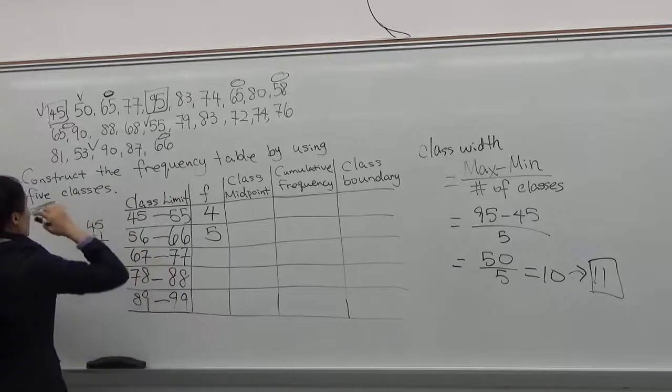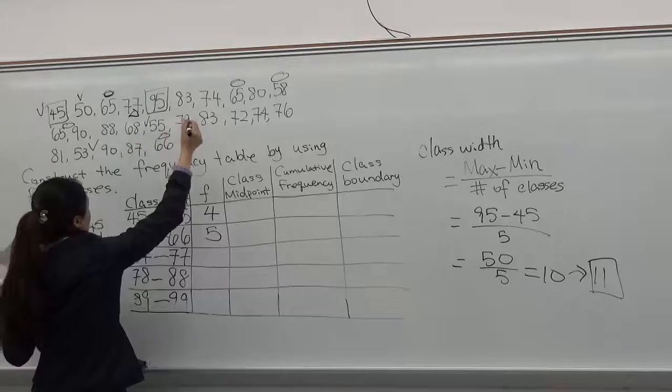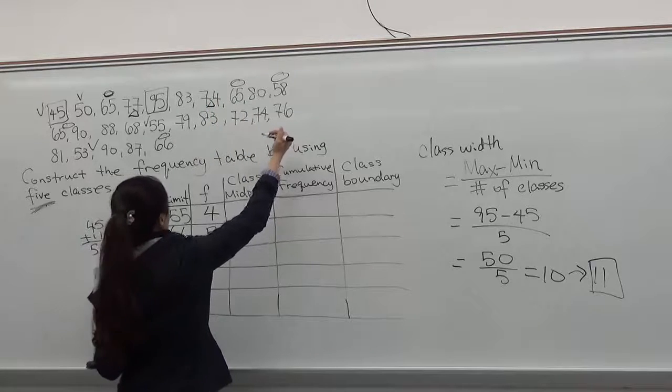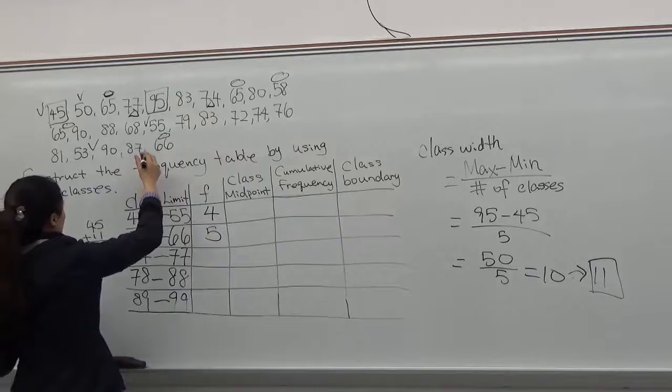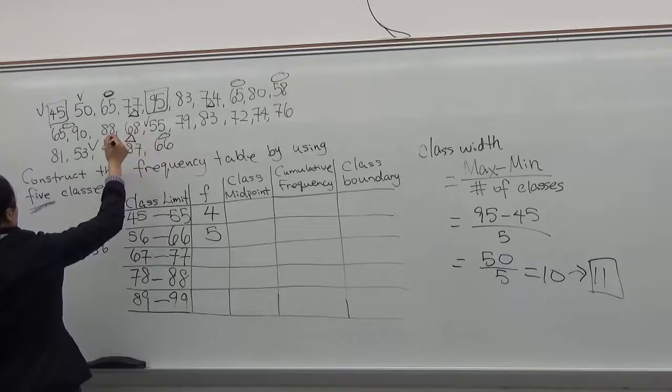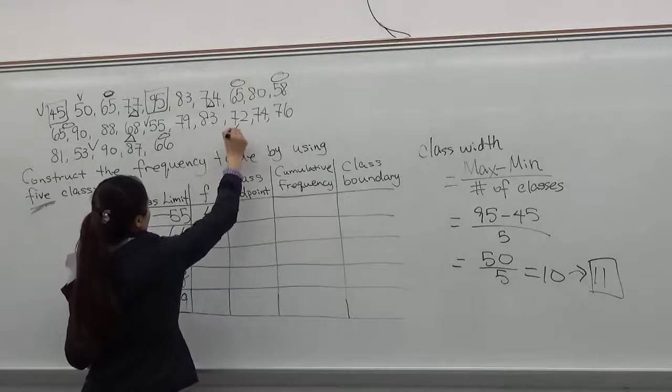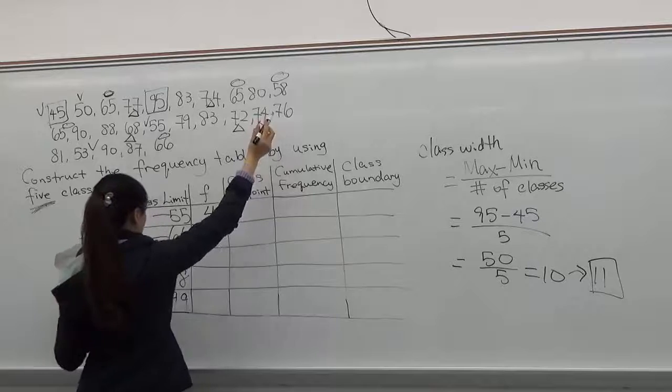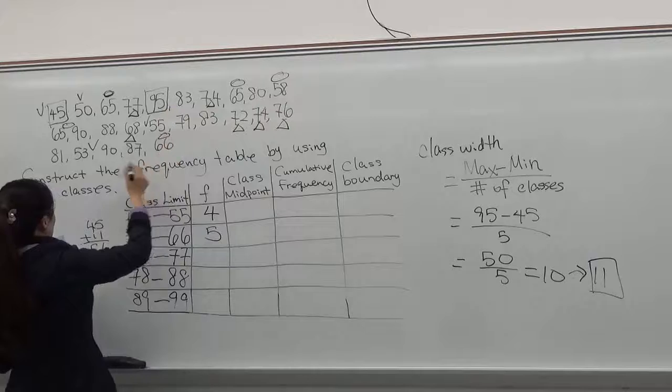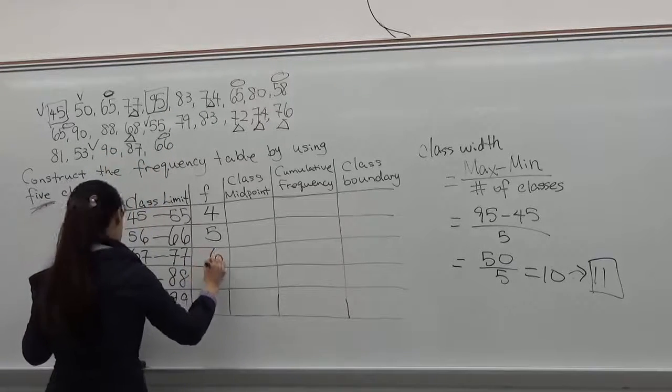And 67 to 77. This is 1, 2, 67, 3, 4, 5, 6. That's all the numbers you have. The frequency is 6.